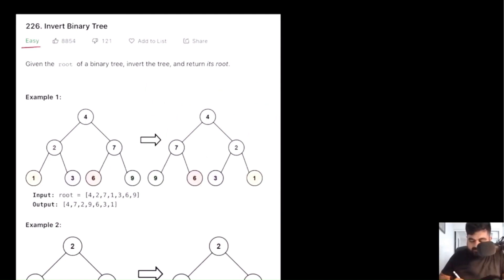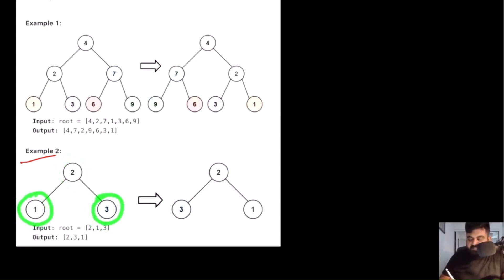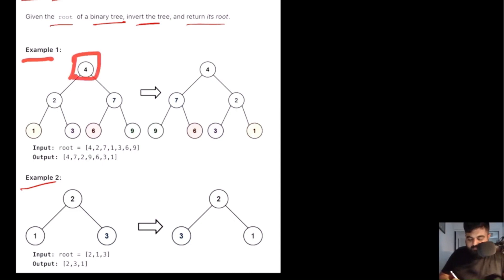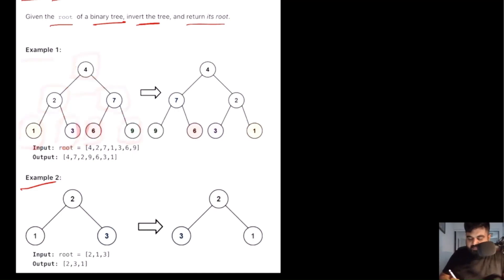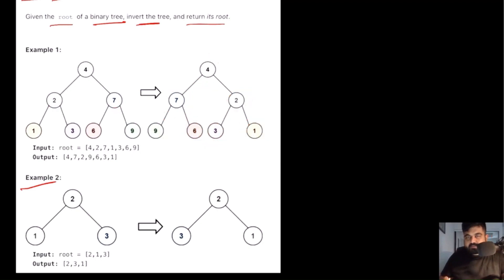This is a LeetCode easy problem and also very well-liked on LeetCode. We are given the root of a binary tree and we need to invert the tree and return its root. For example, given a tree with root 2, left child 1, and right child 3 — after inverting, 2 remains the root but 3 becomes the left child and 1 becomes the right child. For the more complex example with root 4 and children 2 and 7, after inverting all nodes including leaf nodes, we get the mirrored tree.